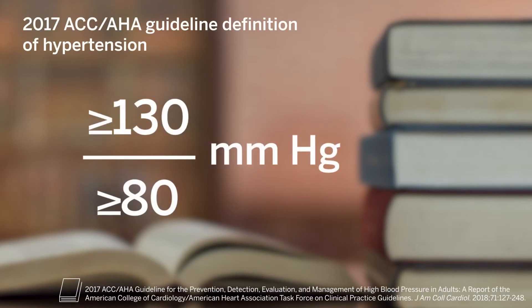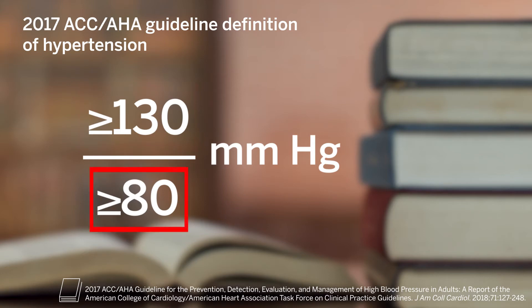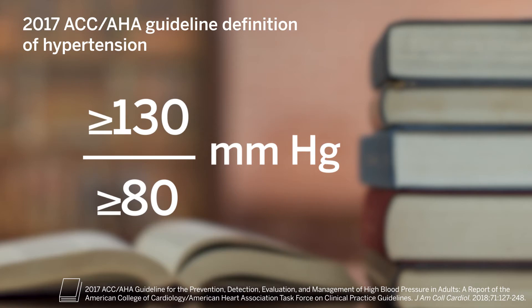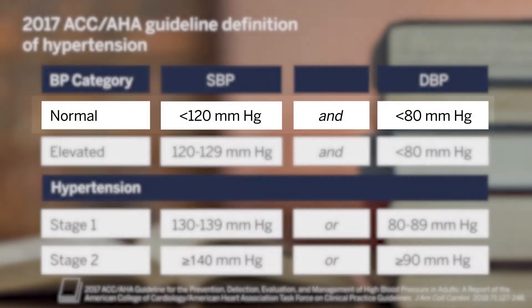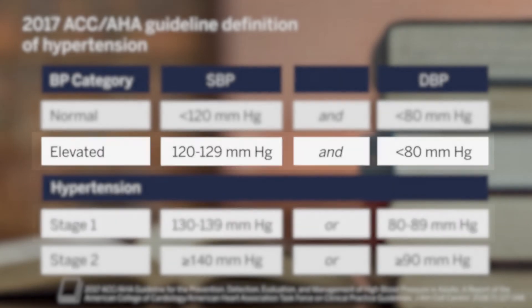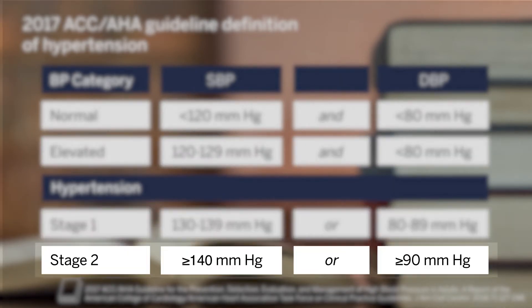Now that you've measured your patient's blood pressure, how do you interpret the readings? The 2017 ACC/AHA guidelines define hypertension as a systolic blood pressure greater than or equal to 130 mmHg or a diastolic blood pressure greater than or equal to 80 mmHg. The guidelines further define four categories of blood pressure: normal, elevated, stage 1 hypertension, and stage 2 hypertension, indicating more severe hypertension. Stage 2 is defined as a systolic blood pressure greater than or equal to 140 mmHg or a diastolic blood pressure greater than or equal to 90 mmHg.